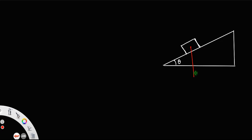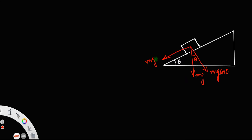The first force is the weight, which is acting vertically downward. This weight can be resolved into mg cos theta — since this angle is theta, this angle will also be theta — so mg cos theta acts along the downward direction, and mg sin theta acts along the plane.